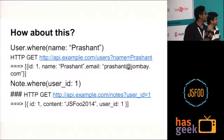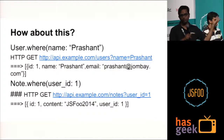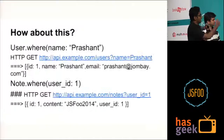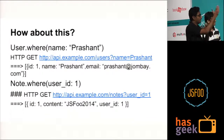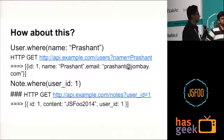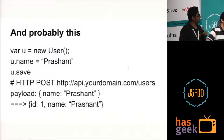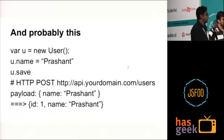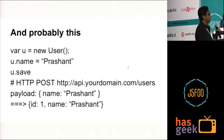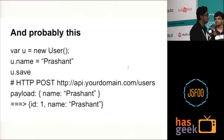How about this: user.where(name: 'Prashant') — and it gives you that object or an array of objects. It basically makes an HTTP GET request to the API endpoint and you get those objects on your Node route. And also, you should be able to create a new object and just save it — it should fire a POST request and that object is created.